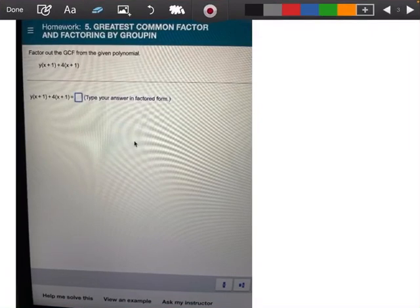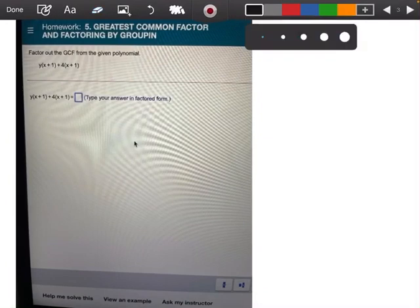All right, excuse me y'all. So this is a problem out of the homework for five, greatest common factor and factoring by grouping. I guess I forgot to put a G right here under factoring by grouping, supposed to be a G right there.